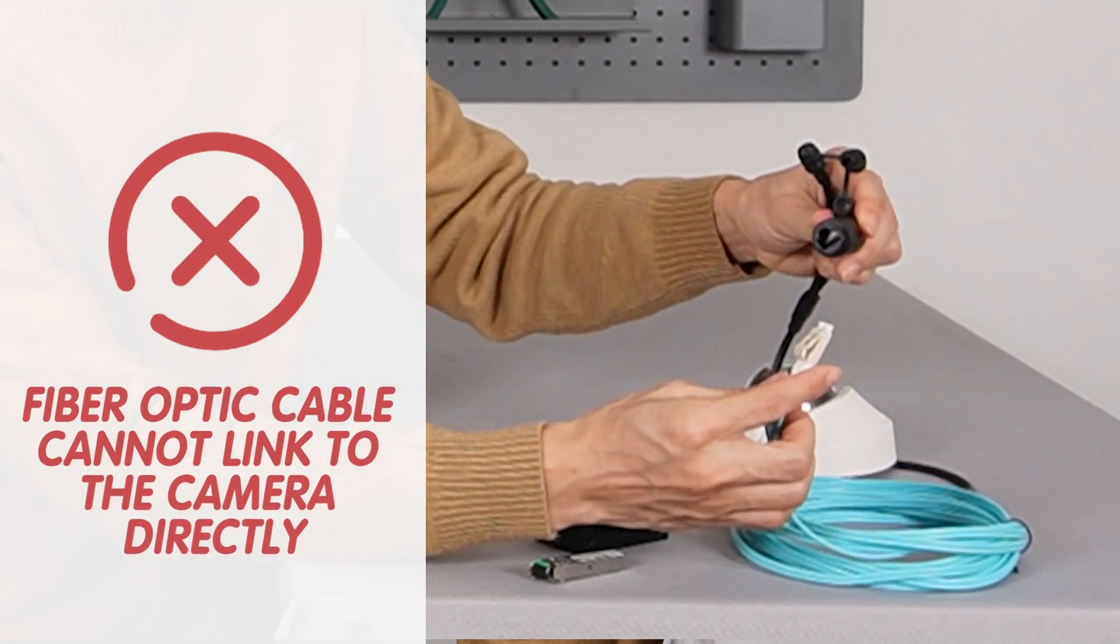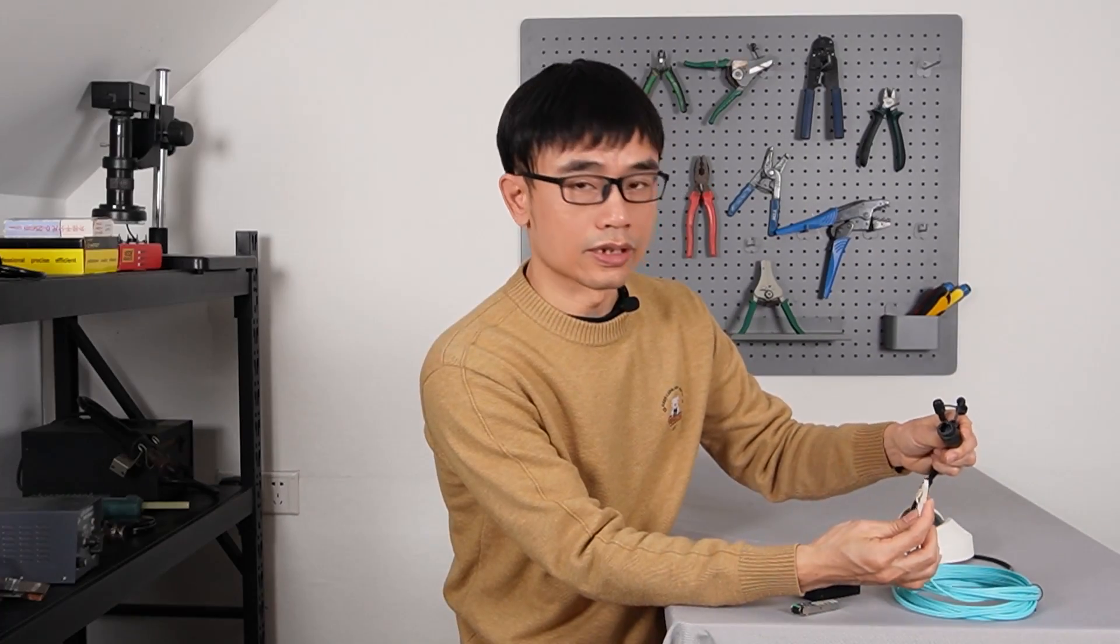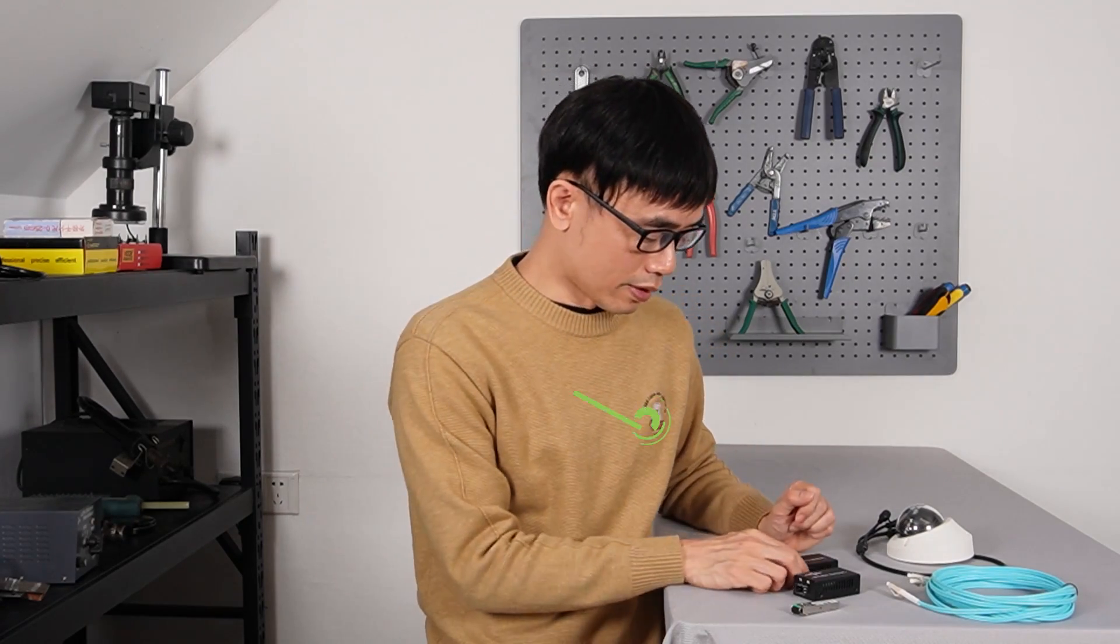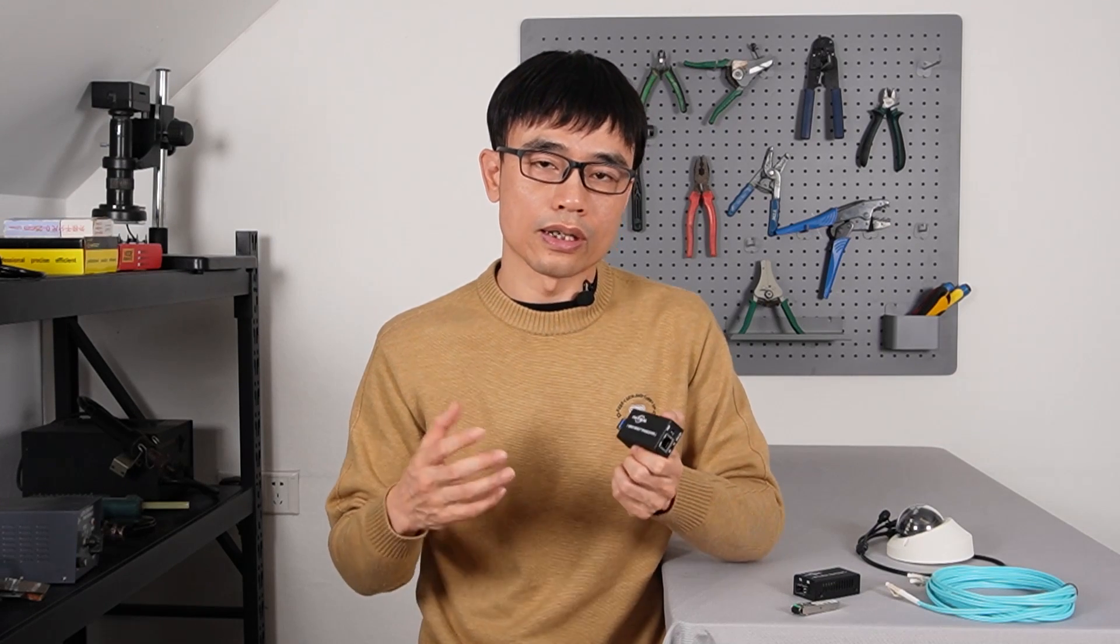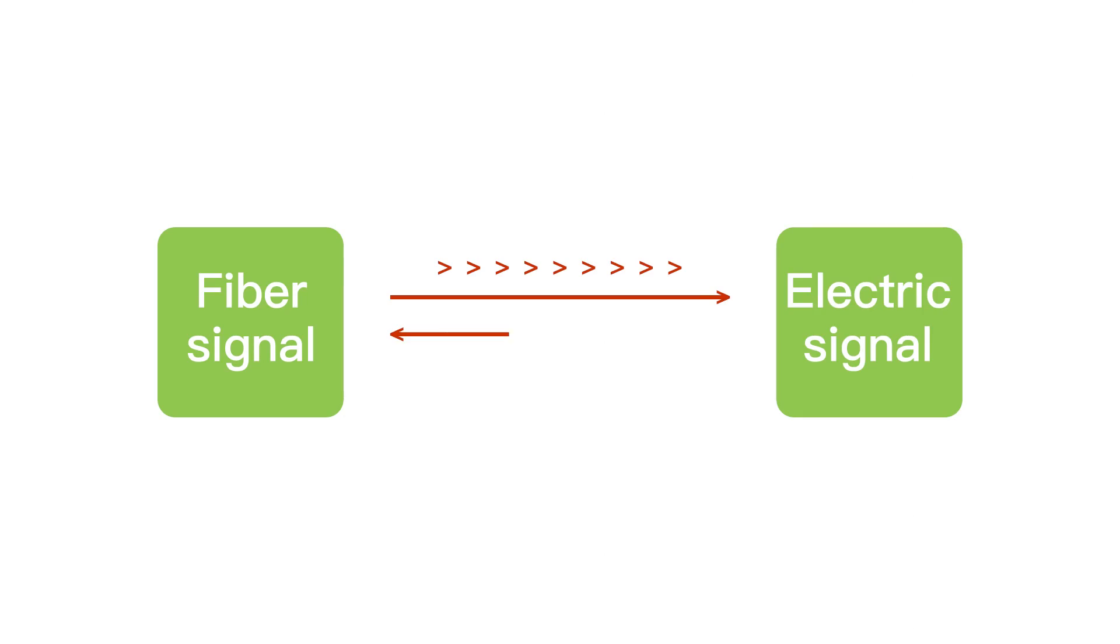We cannot connect this fiber optic cable to the IP camera because the connection and the signal are totally different. In this case, we will need one device called a media converter.